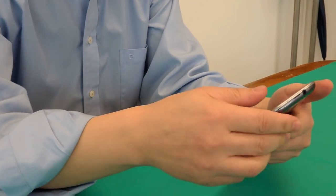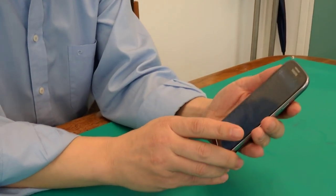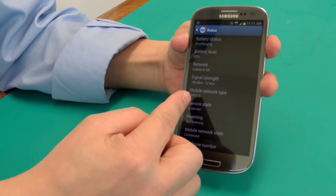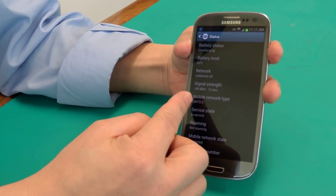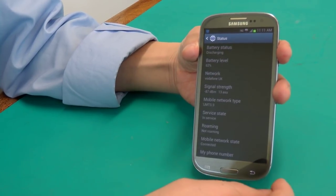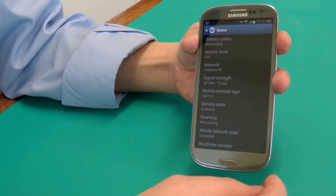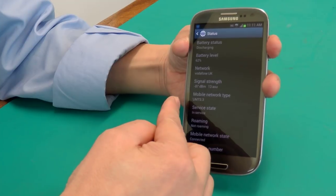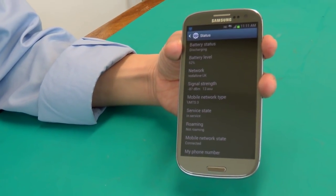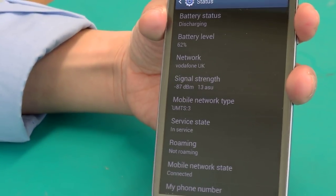Then we are going to look at the signal strength again. As you can see, the signal strength is getting better. As you can see, the bar here is about minus 87. That is at least 10 dB improvement over the previous case.